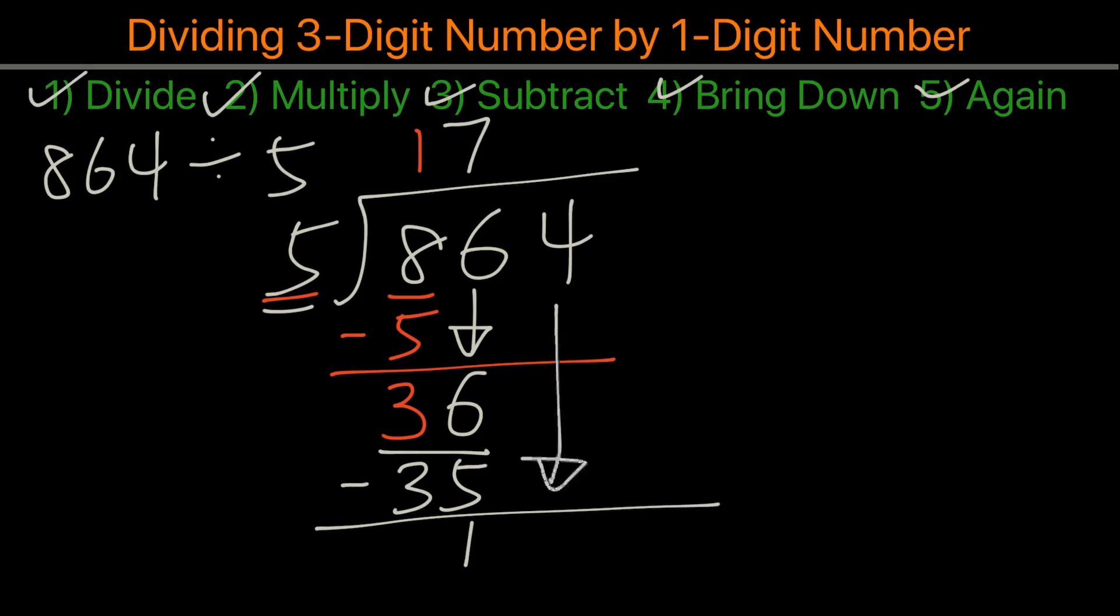Again, bring down the 4. Then we'll take 14 divided by 5. 2 will go into it, and this will become 10. We minus that, and then this will be 4.